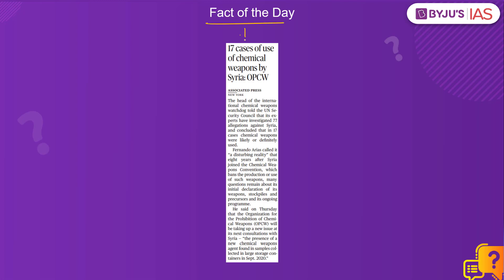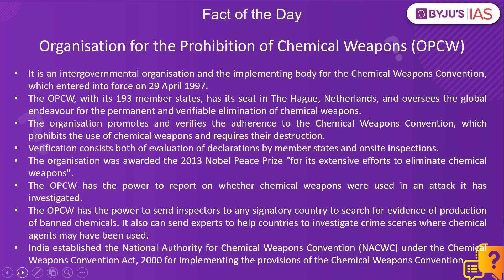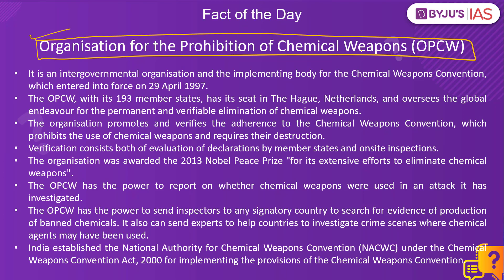Coming to the fact of the day, let's look at this article from The Hindu. According to the article, 17 cases of usage of chemical weapons by Syria have been noted by the OPCW. The OPCW has informed the UN Security Council that its experts and investigators have detected 17 cases of likely usage of chemical weapons, even though it has been eight years since Syria joined the Chemical Weapons Convention. This convention bans the production and usage of chemical weapons, and member countries are obligated to declare their stockpile, destroy it, and stop producing or procuring chemical weapons. Despite these obligations, Syria has been found to possess stockpiles, and in at least 17 cases these weapons have reportedly been used, as confirmed by the OPCW. In this context, let's talk about the Organization for the Prohibition of Chemical Weapons, or OPCW.